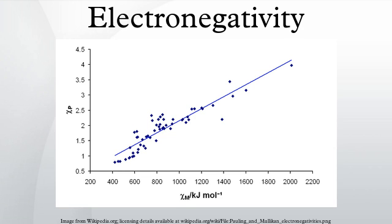Sanderson electronegativity equalization: Sanderson has noted the relationship between Mulliken electronegativity and atomic size, and has proposed a method of calculation based on the reciprocal of the atomic volume. With knowledge of bond lengths, Sanderson's model allows the estimation of bond energies in a wide range of compounds. The model has also been used to calculate molecular geometry, S-electron energy, NMR spin-spin constants, and other parameters for organic compounds. This work underlies the concept of electronegativity equalization, which suggests that electrons distribute themselves around a molecule to minimize or equalize the Mulliken electronegativity — behavior analogous to the equalization of chemical potential in macroscopic thermodynamics.